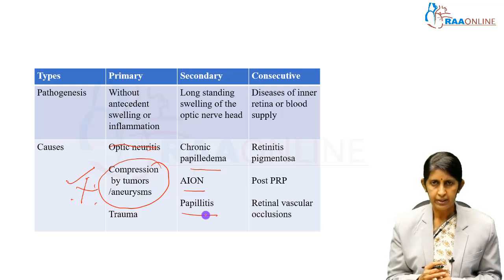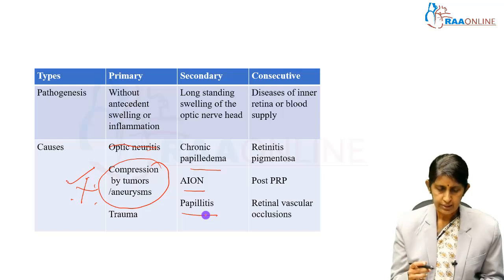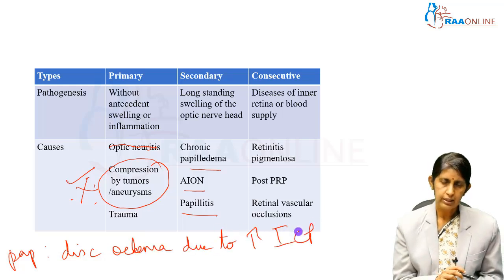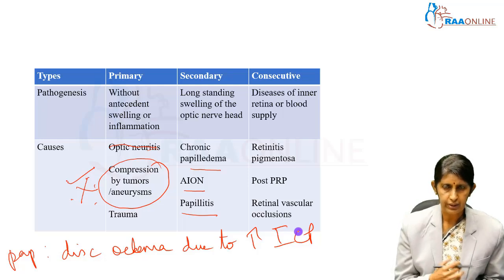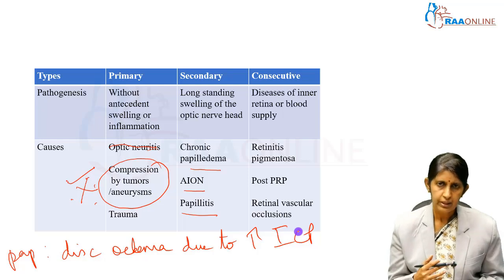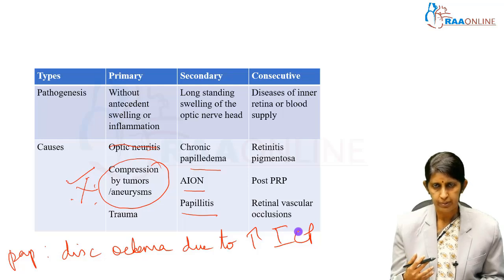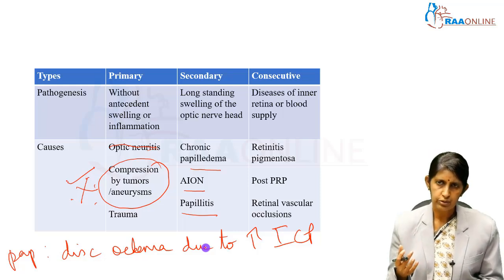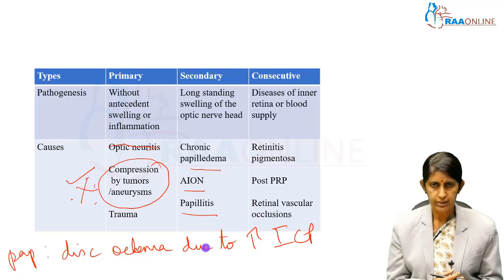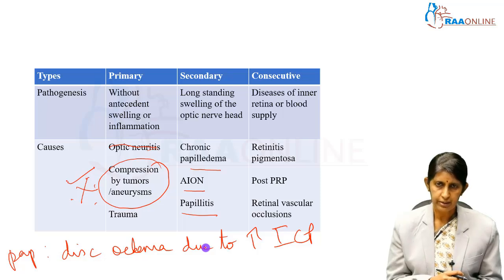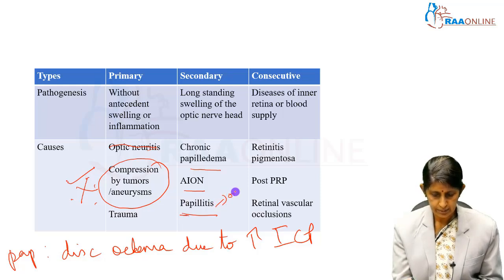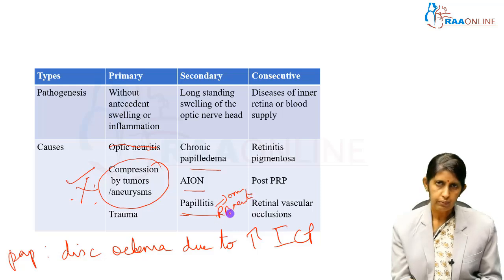Papilledema specifically means disc edema due to increased intracranial pressure. In these patients, the eye has long-standing edema which in its final stages results in optic atrophy. Papilledema is staged as early, established, chronic, and atrophic. Ischemic optic neuropathy involves a problem with blood supply to the optic nerve head; one of its most common associations is giant cell arteritis. Papillitis means inflammation and includes optic neuritis and retrobulbar neuritis — these are all common causes of secondary optic atrophy.